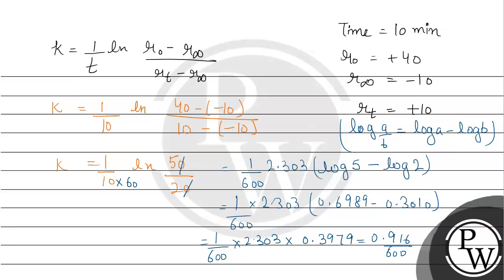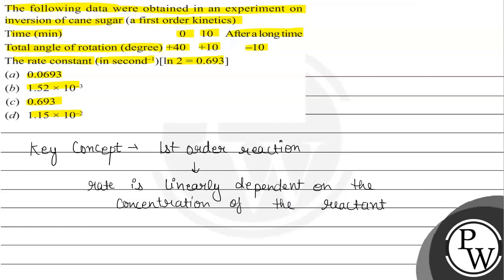Now by division, the answer will be 0.00152 and according to the options we can write this as 1.52 x 10^-3 and this is option b.